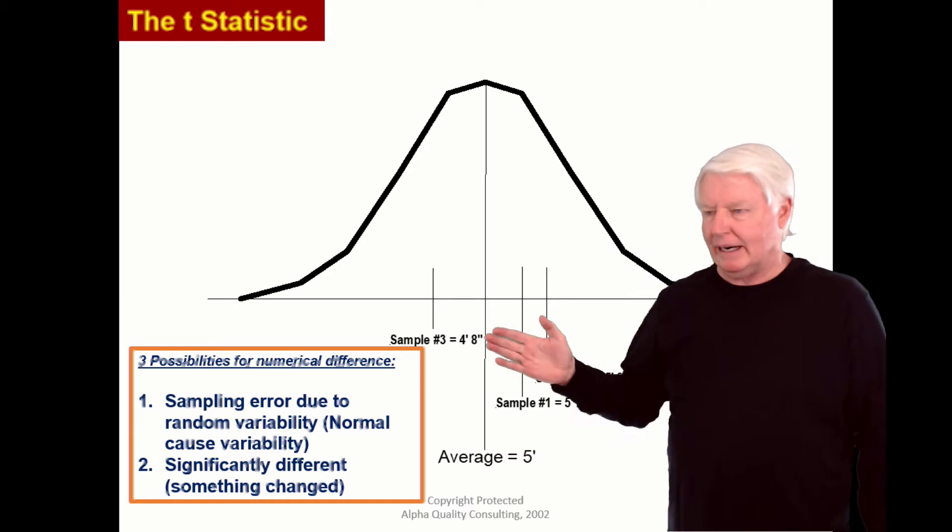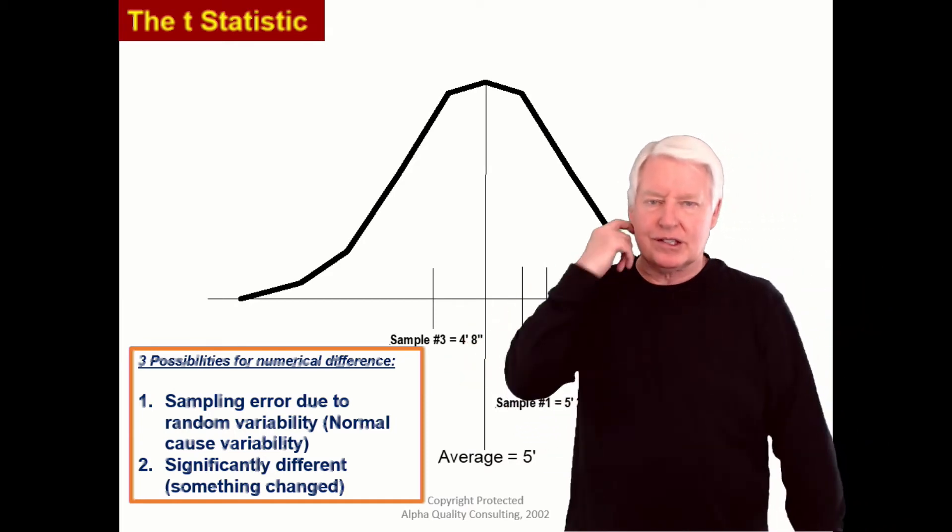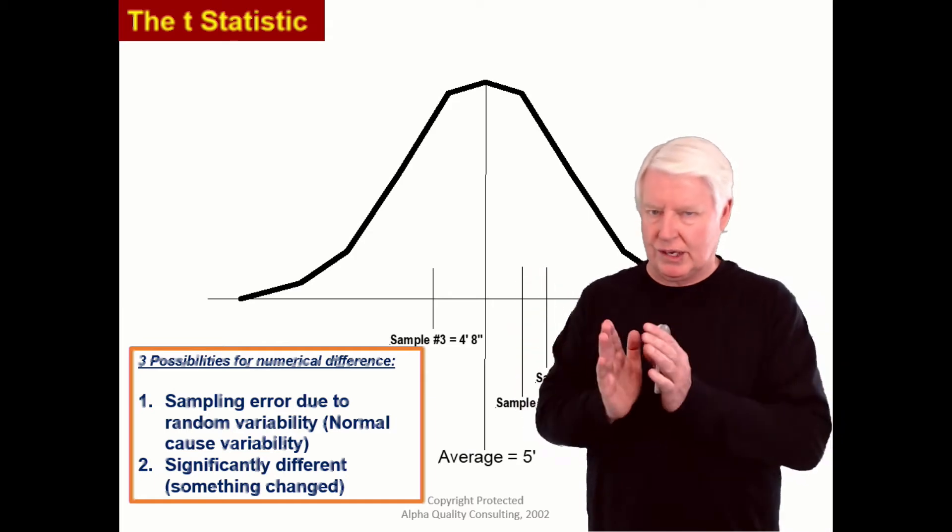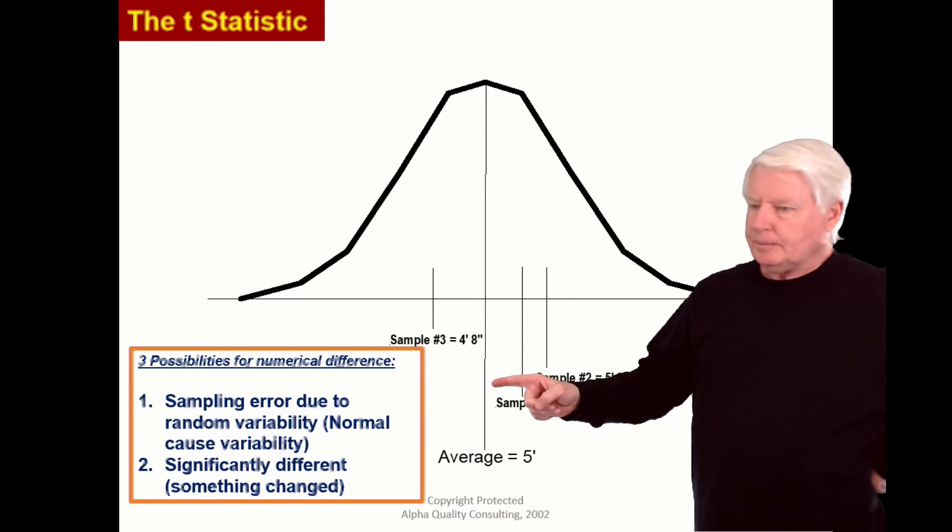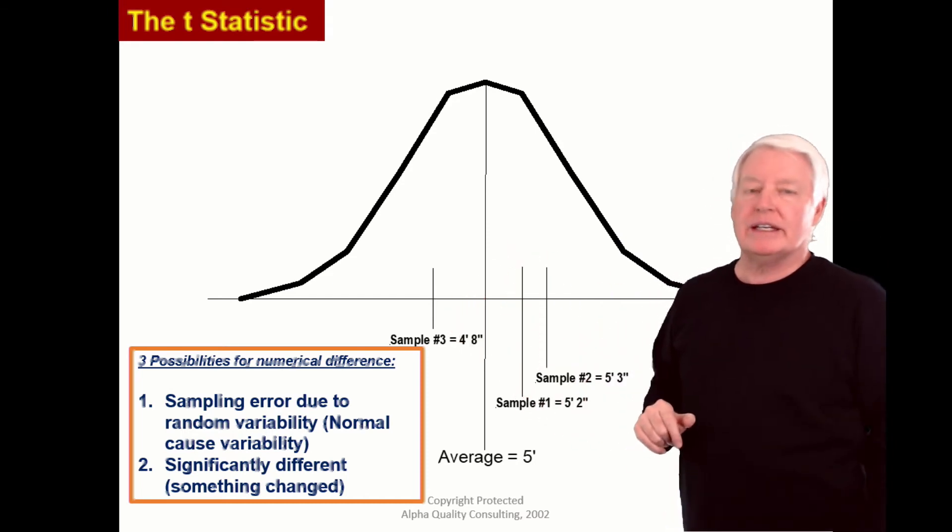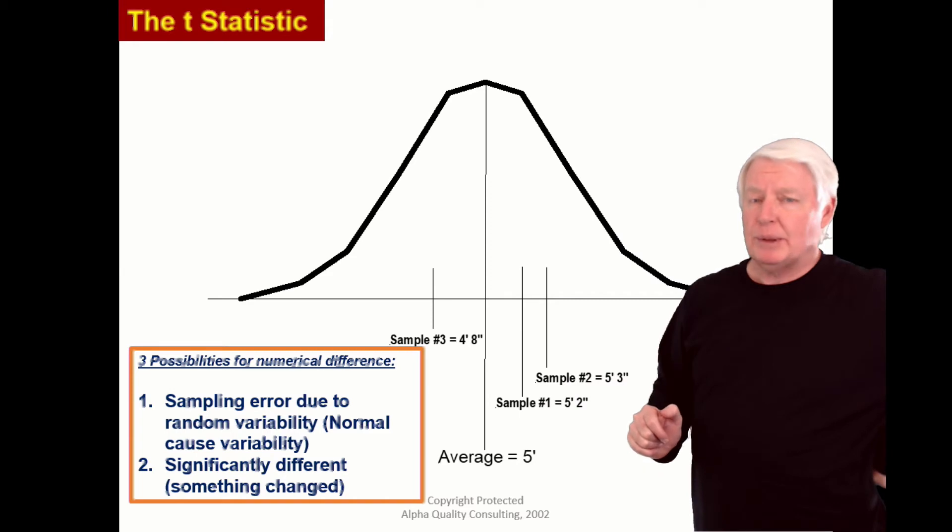There's two ways to reduce sampling error. One is increased sample size. 30 or over is a good start. Or more randomized sampling will also reduce sampling error. But in the end that's the difference between T and Z. Z does not take into account sampling error because it uses such large sample size that you can ignore sampling error. But T is used when you use smaller sample size and sampling error does need to be taken into account, which is sample sizes of less than 30.